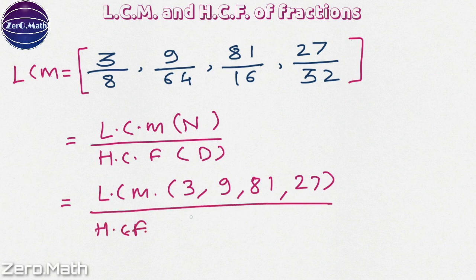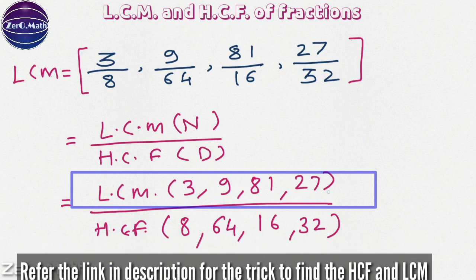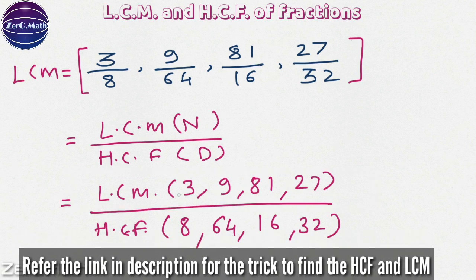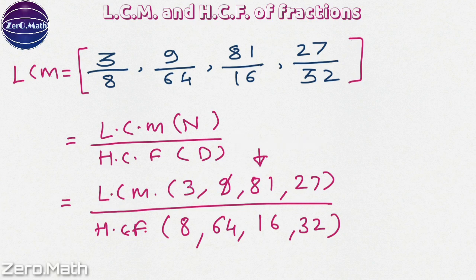So let us figure out the HCF of 8, 64, 16 and 32. Now, if you have seen our previous video to find out the LCM of a given number, you can easily figure out the LCM of these numbers. Let us find out which is the highest number among the given numbers — that is 81. Now let us check whether 81 is divisible by 9. Yes, it is divisible by 9. 81 is divisible by 3 as well, and it is completely divisible by 27 as well. Hence, the LCM will be 81.